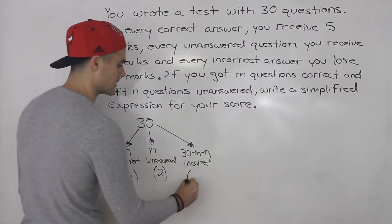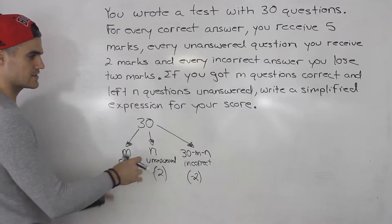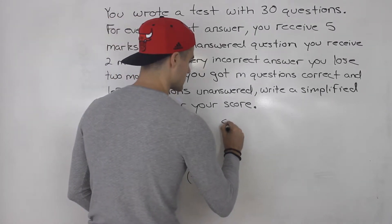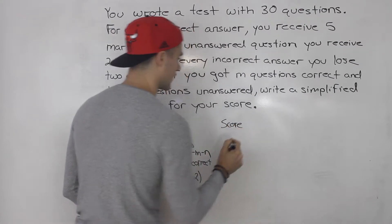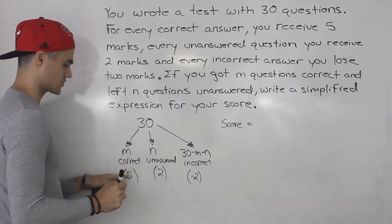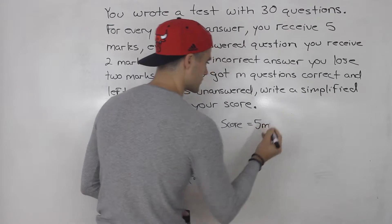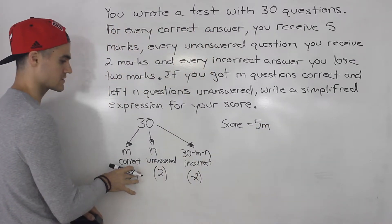And for these you are losing 2 marks. So basically with this now we can create an expression for your final score. You are receiving 5 marks for every correct question. So 5 times M gives us all of the marks you receive from all of your correct answers.